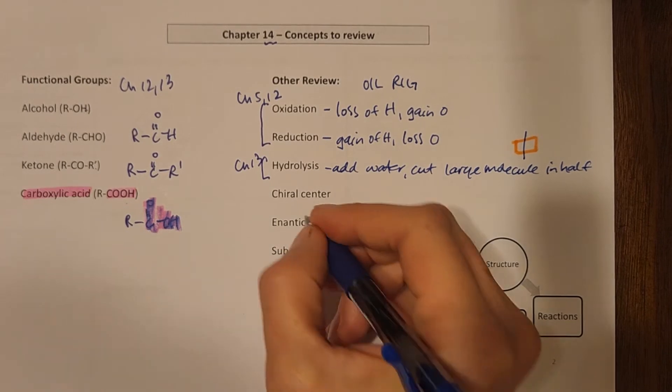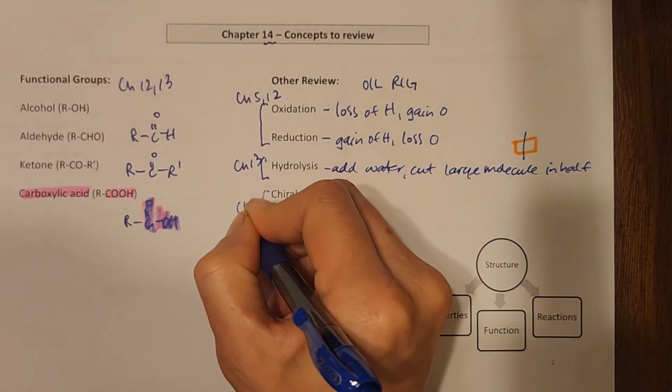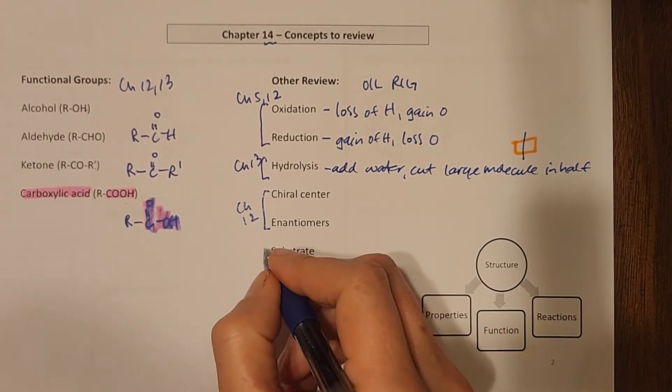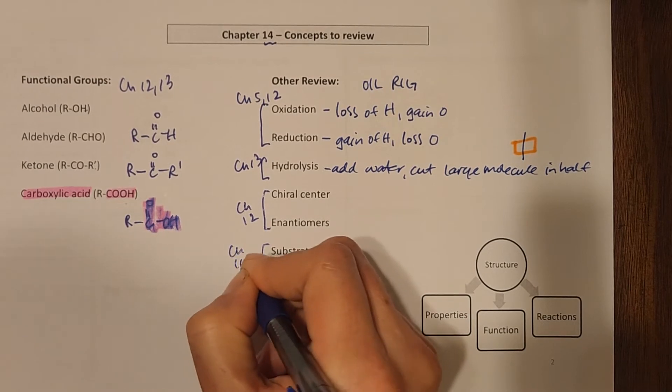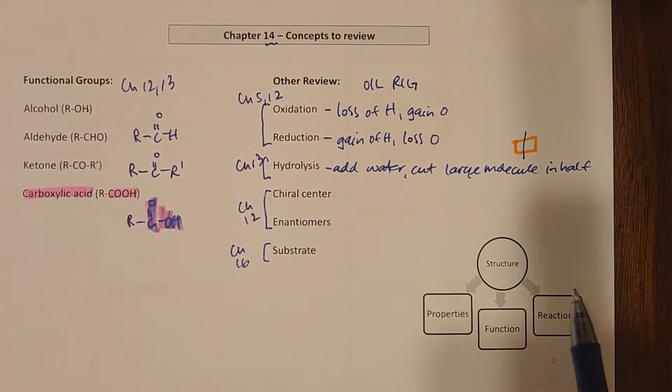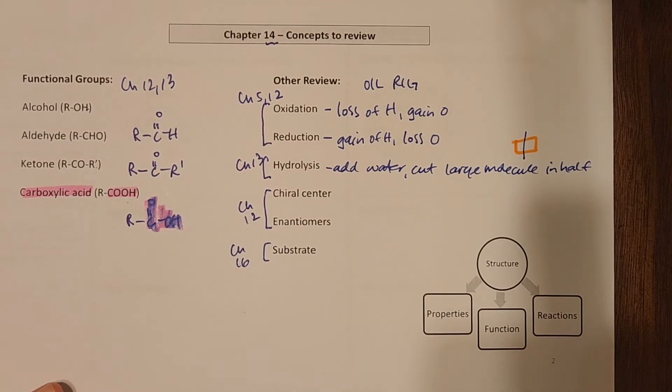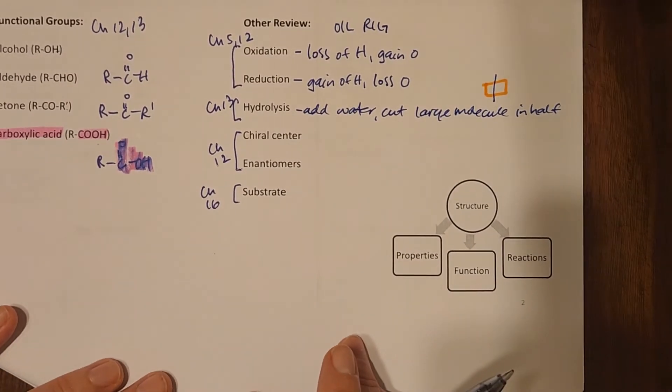Chiral centers and enantiomers, we learned about those at the end of chapter 12. And then coming up in chapter 16, we'll be talking about substrates. So those are some concepts to make sure that you are strong and comfortable with.